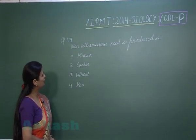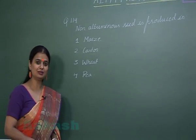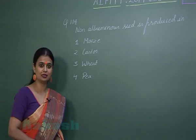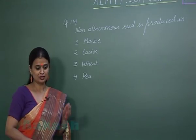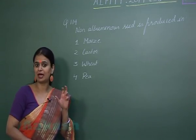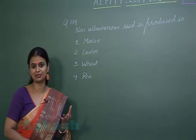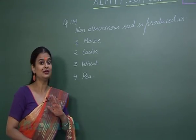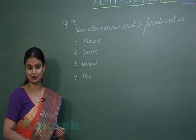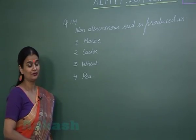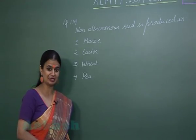In question 119 we have to see which of the following form non-albuminous seeds. Non-albuminous means non-endospermic seeds. Non-endospermic seeds are produced in dicots. In dicots, the developing embryo utilizes all the endosperm — the nutrition present in the endosperm — so that in the mature seed the endosperm is absent. Such seeds in which the endosperm is absent at maturity are known as non-albuminous or non-endospermic seeds, seen in dicots.